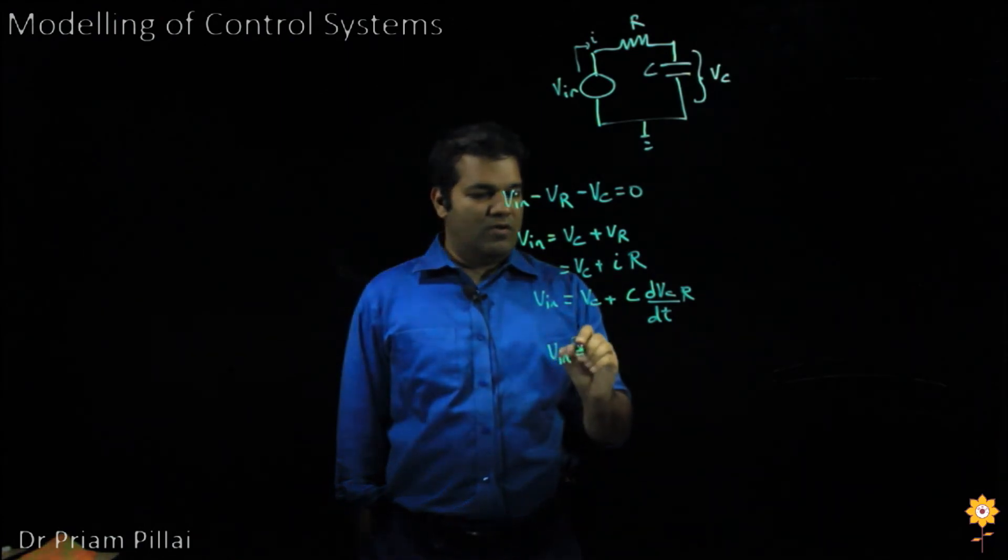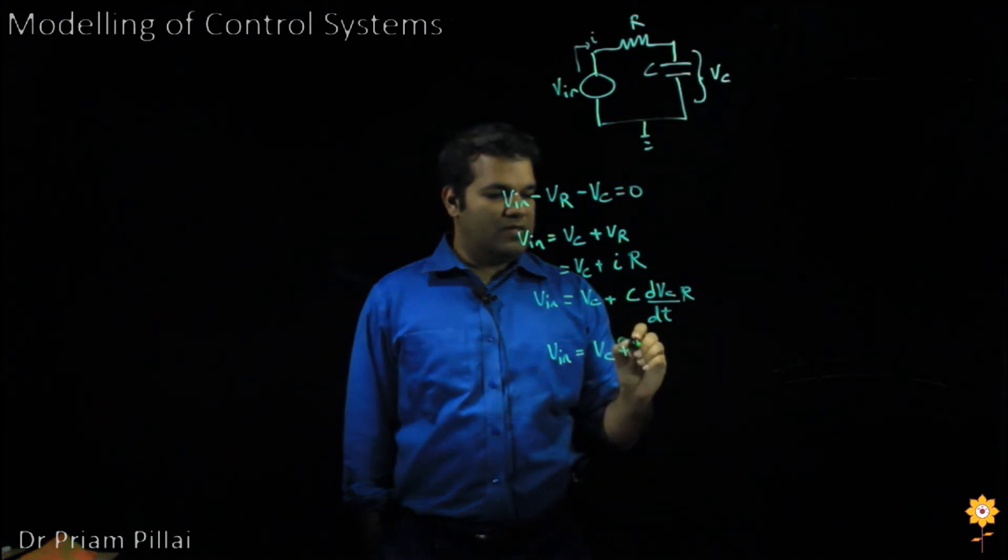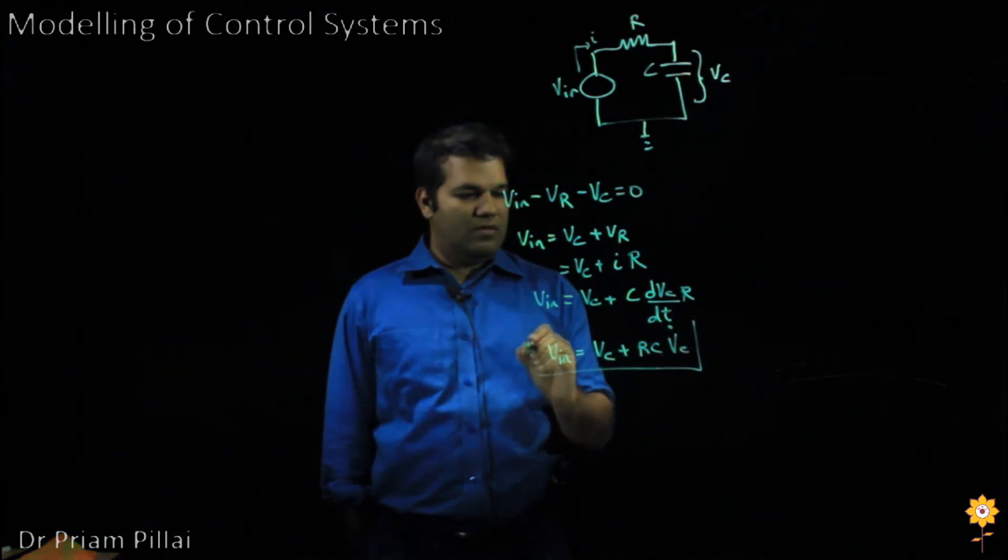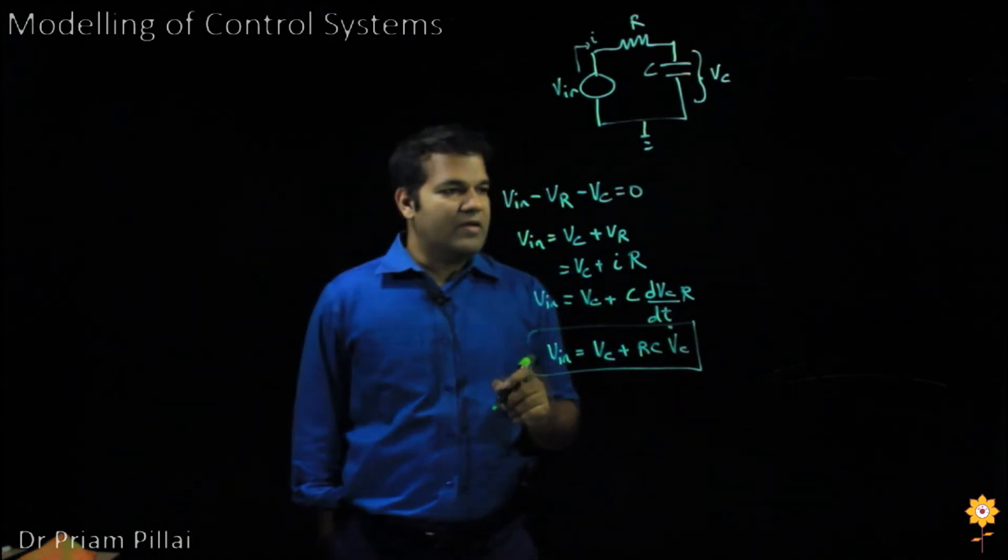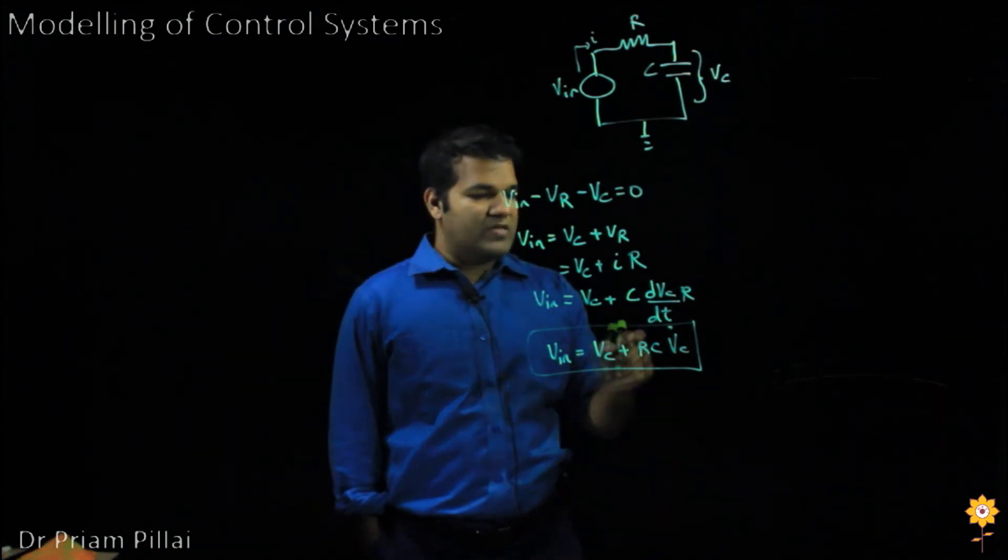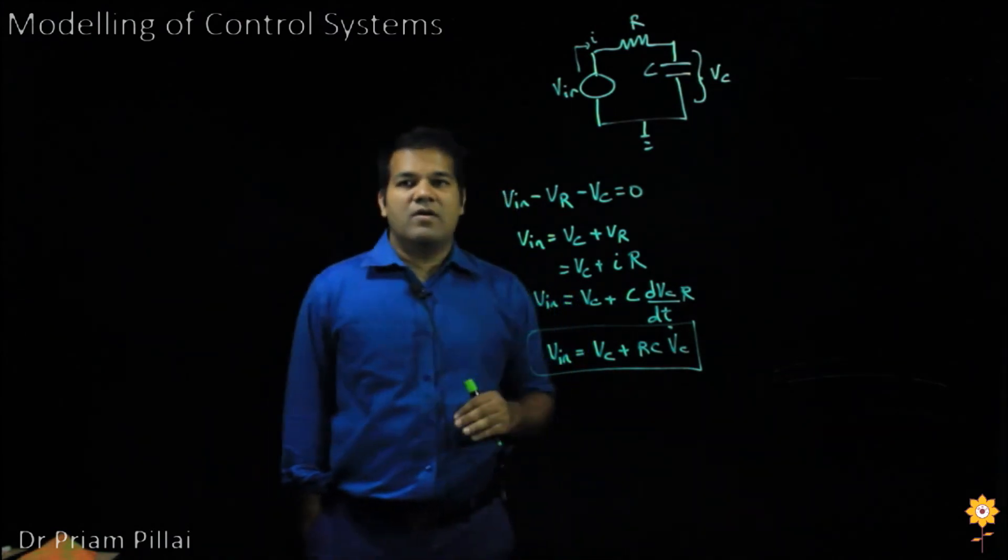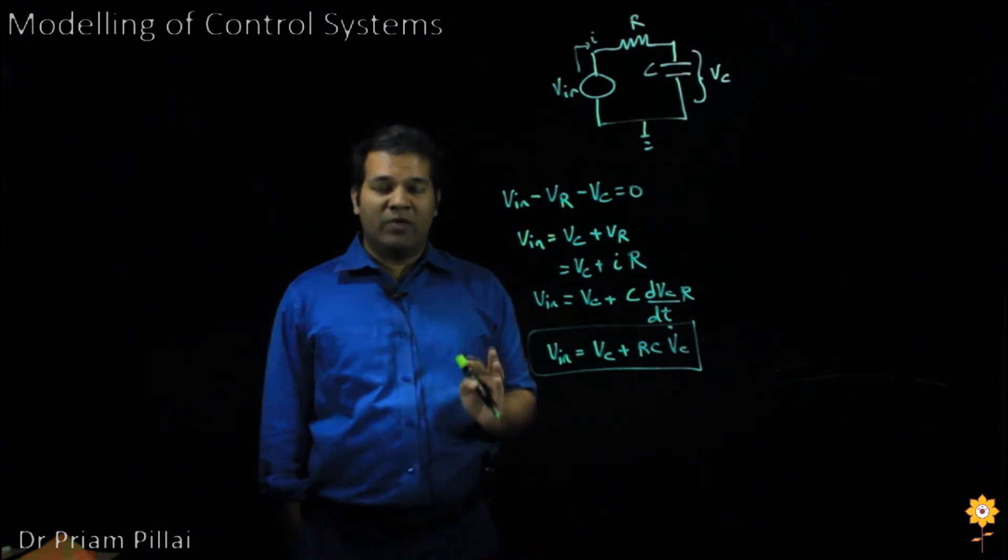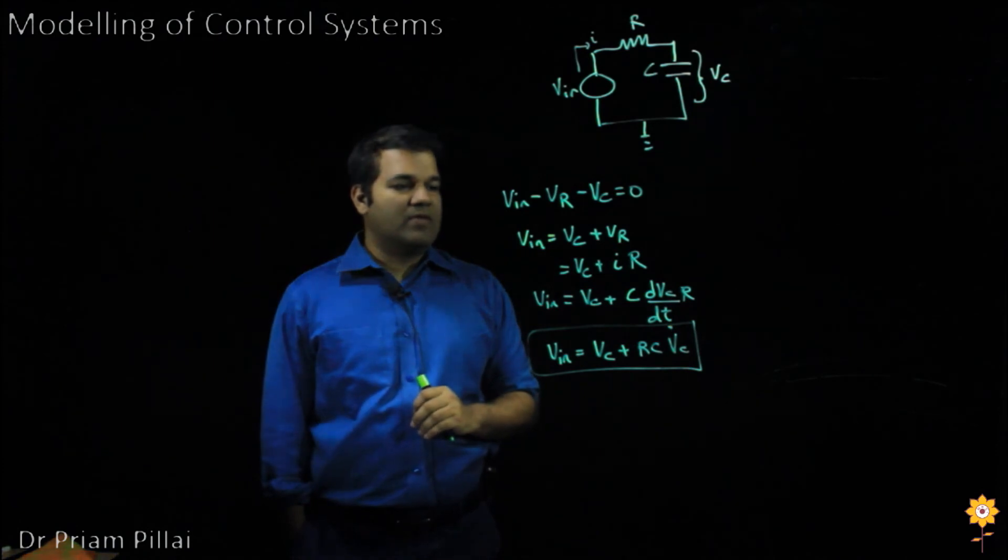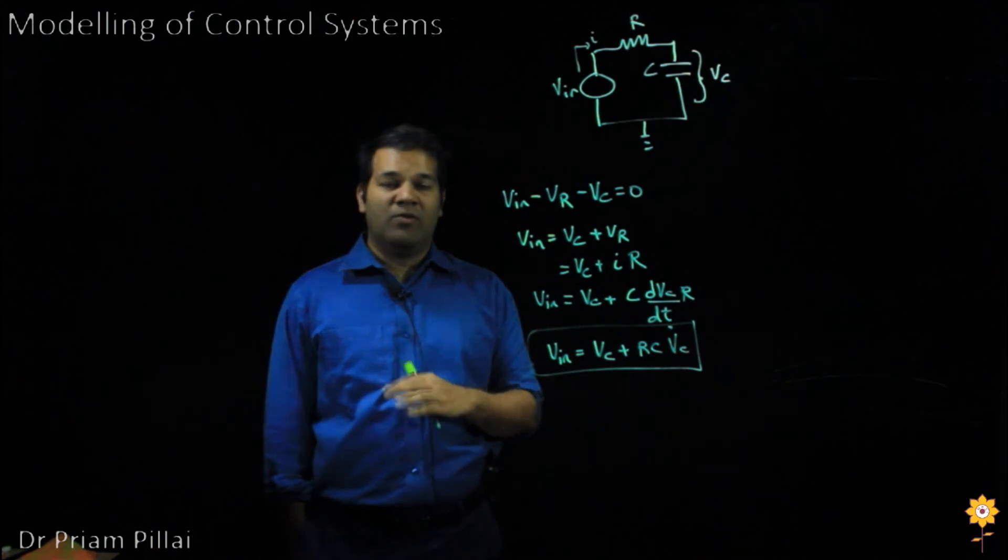So V in would then equal V C plus RC V C dot, where V in is the input, V C is the output that we are looking for, and RC is a constant. Here we have a first order ordinary differential equation with constant coefficients. Again, very similar to the previous two examples that we've seen. And again, the solutions and methods to solving these are very similar to the previous cases.